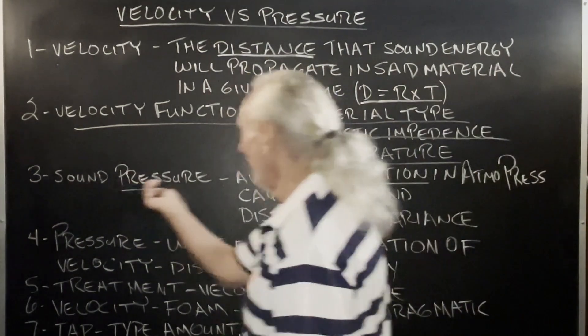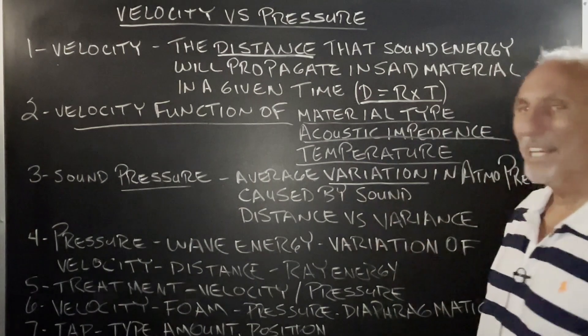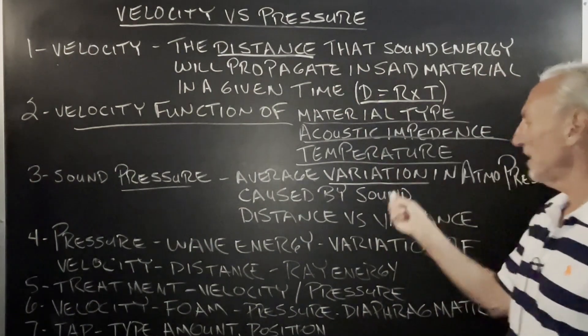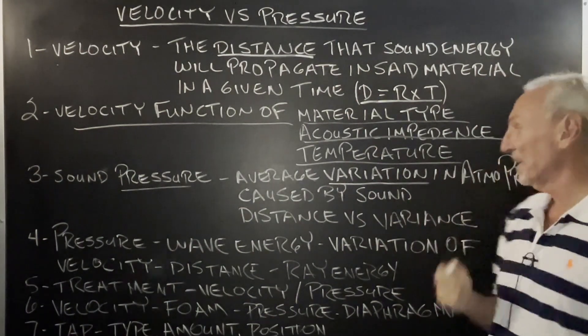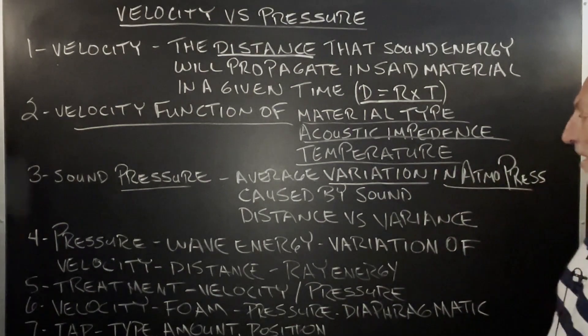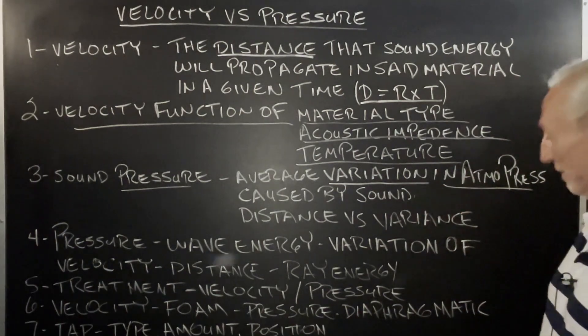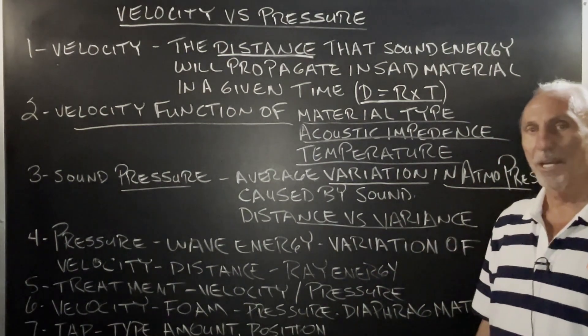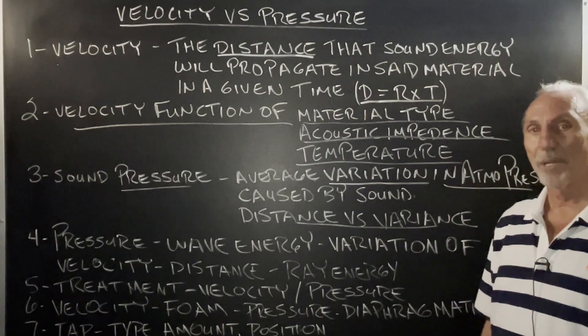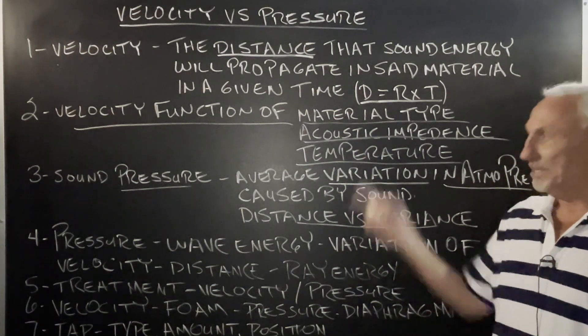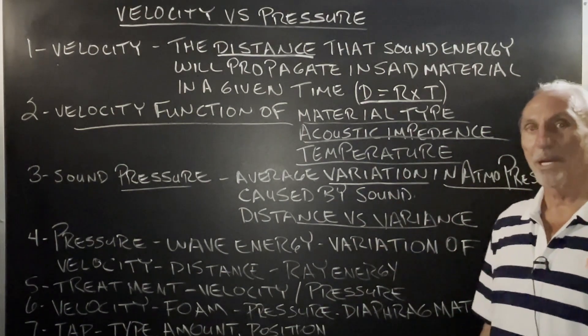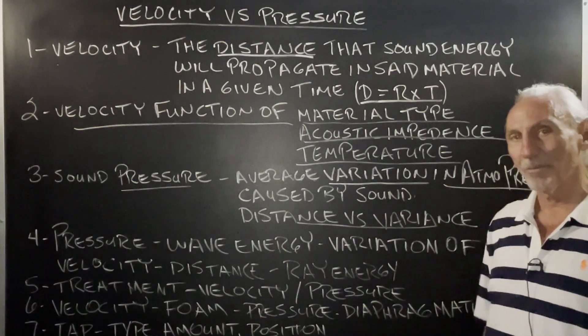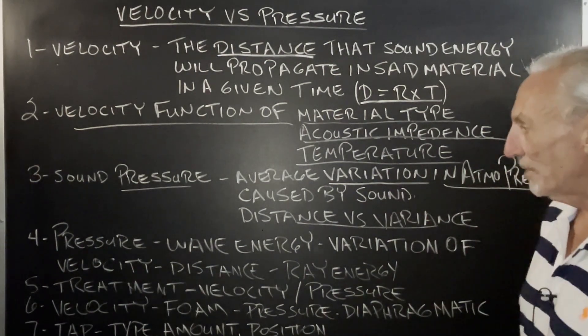Sound pressure is really an average variation. So we have distance and variation. Those are the two things that we need to keep in mind in atmospheric pressure caused by sound distance versus variance. These are the underlying principles underneath pressure and reflections, which are our two major issues.